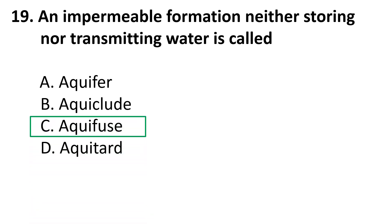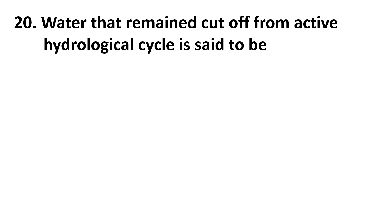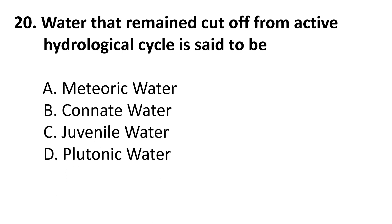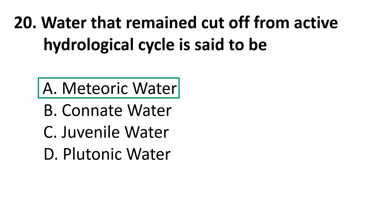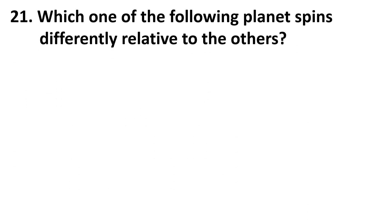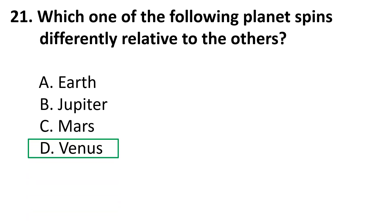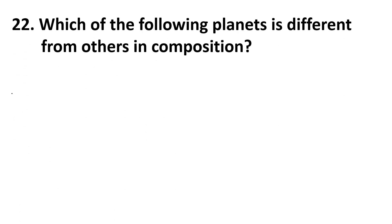Twentieth question: Water that has remained cut off from the active hydrological cycle is said to be? Choices: A) Meteoric water, B) Connate water, C) Juvenile water, D) Plutonic water. The correct answer is B, Connate water. Twenty-first question: Which one of the following planets spins differently relative to the others? Choices: A) Earth, B) Jupiter, C) Mars, D) Venus. The correct answer is D, Venus.